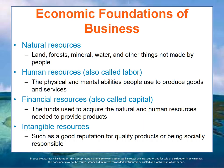Natural resources are land, forest, minerals, water, and other things not made by people. Human resources are the physical and mental abilities people use to produce goods and services — also called labor, or sometimes knowledge workers. Financial resources are the funds used to acquire the natural and human resources needed to provide products — also called capital. Because natural, human, and financial resources are used to produce goods and services, they are sometimes called factors of production. The firm can also have intangible resources such as a good reputation for quality products or being socially responsible. The goal is to turn the factors of production and the firm's intangible resources into competitive advantage.